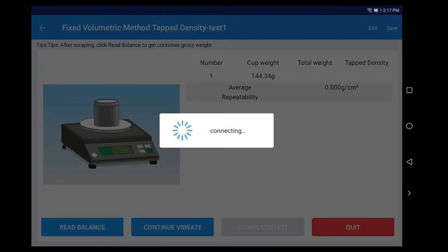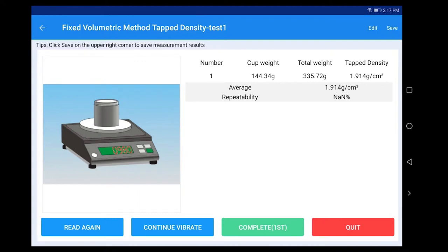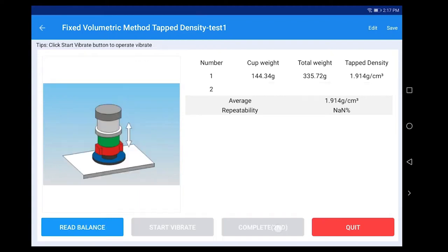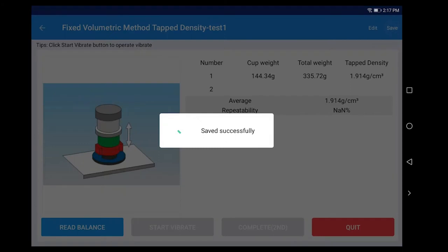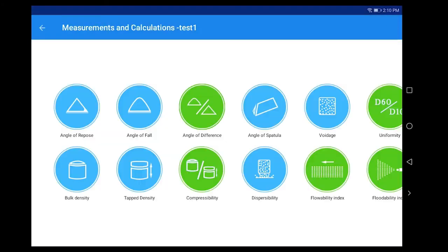After clicking the Read Balance, the tap density result will be displayed. Click Complete first, click Save, and click Quit to complete the tap density measurement fixed volumetric method. It is recommended to repeat the test for three times to calculate the average value.